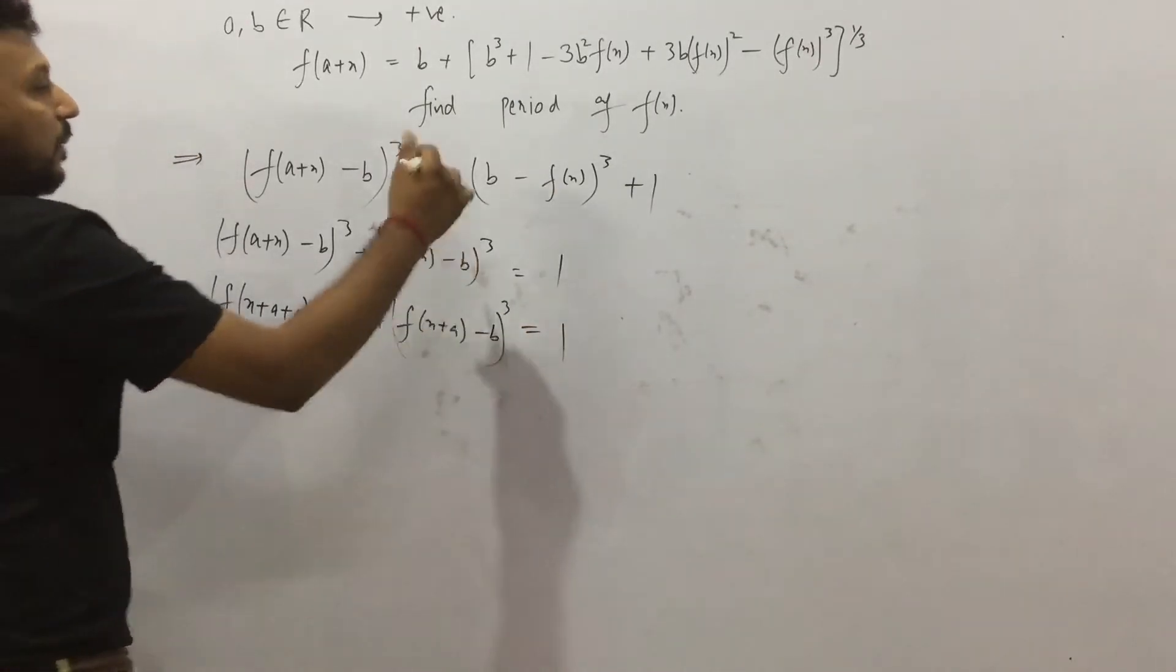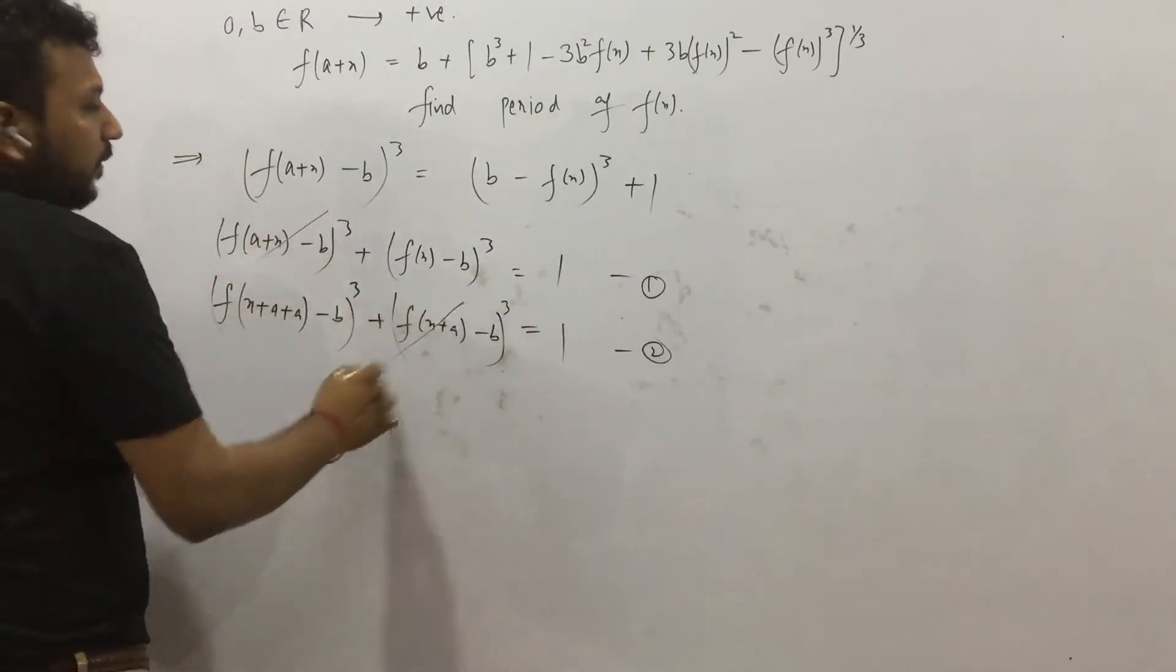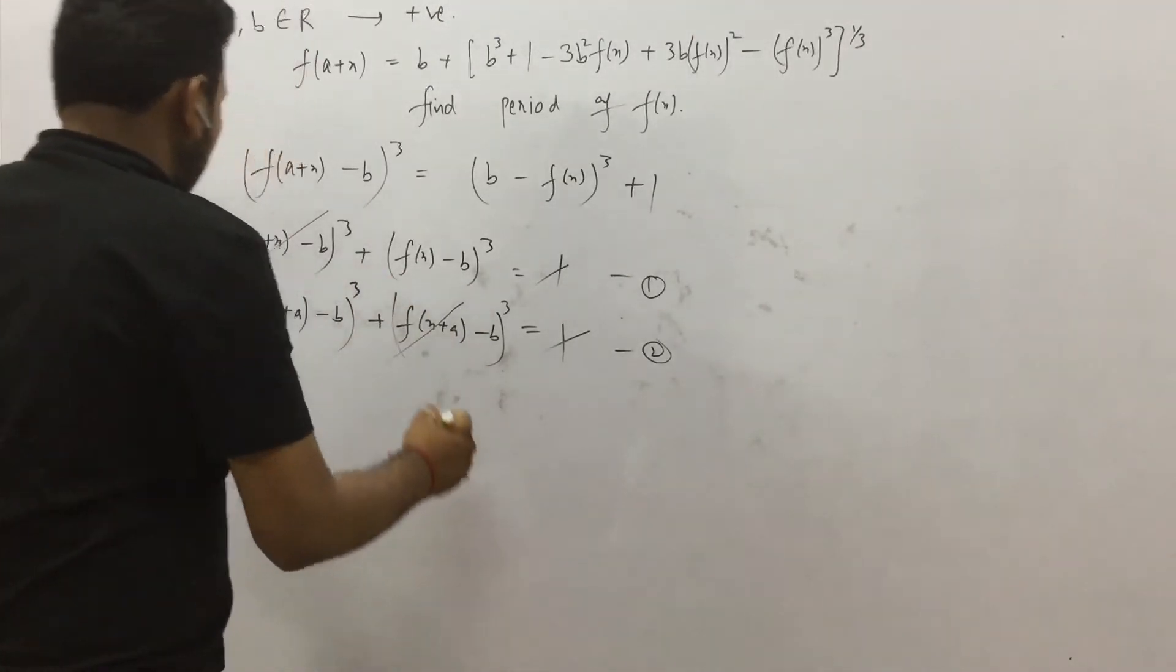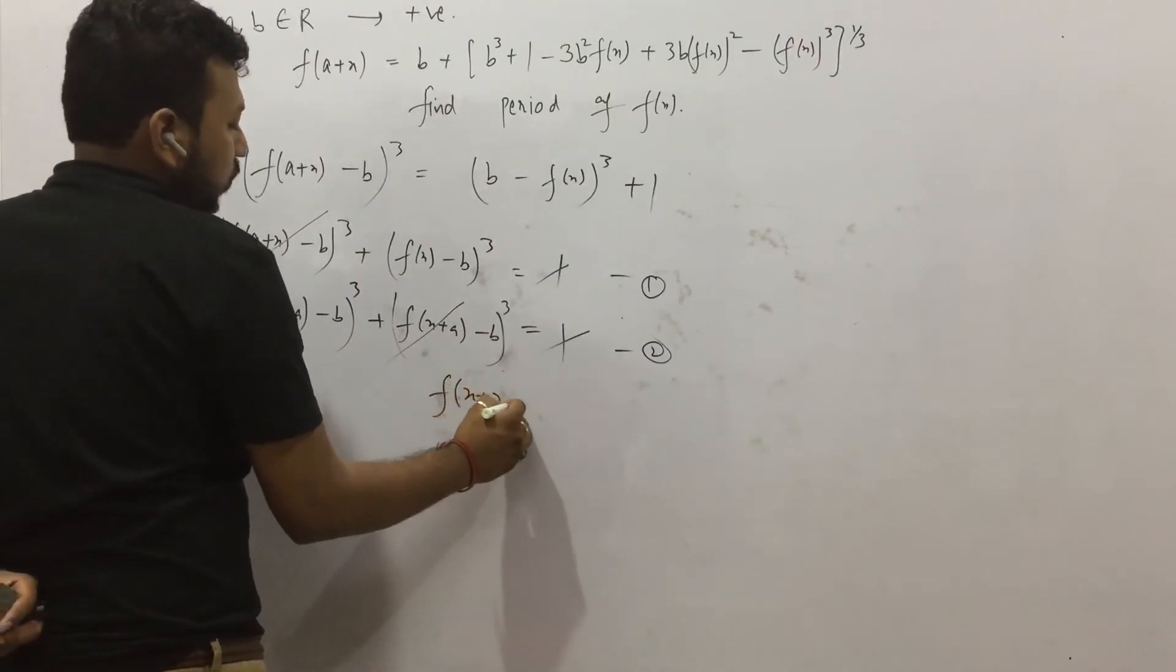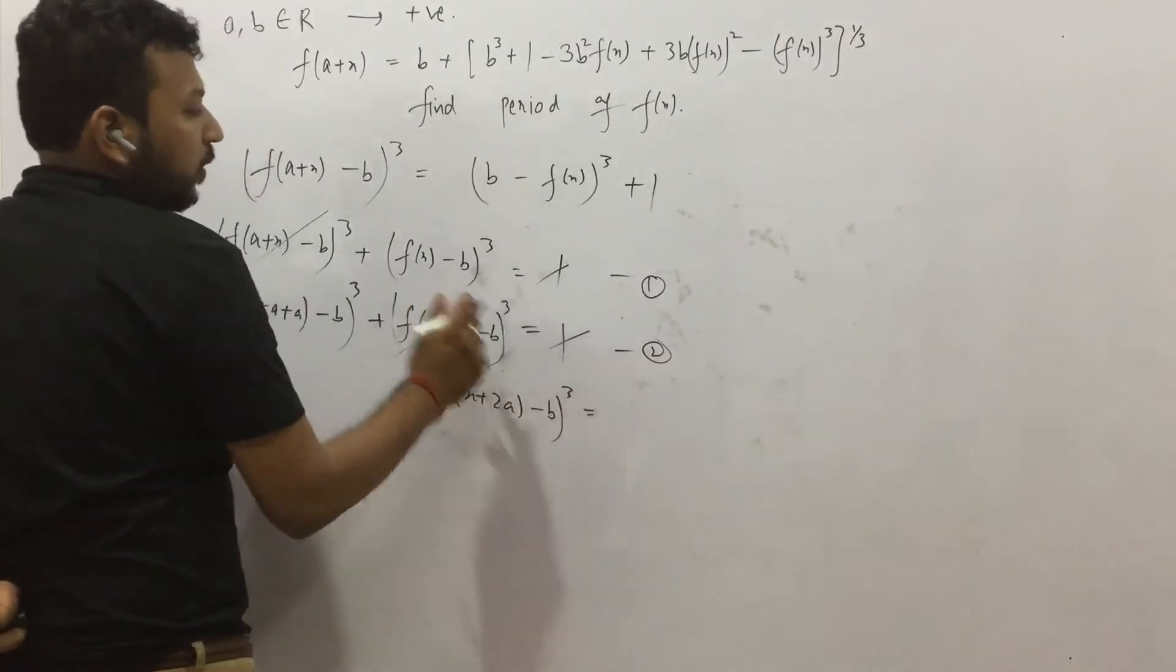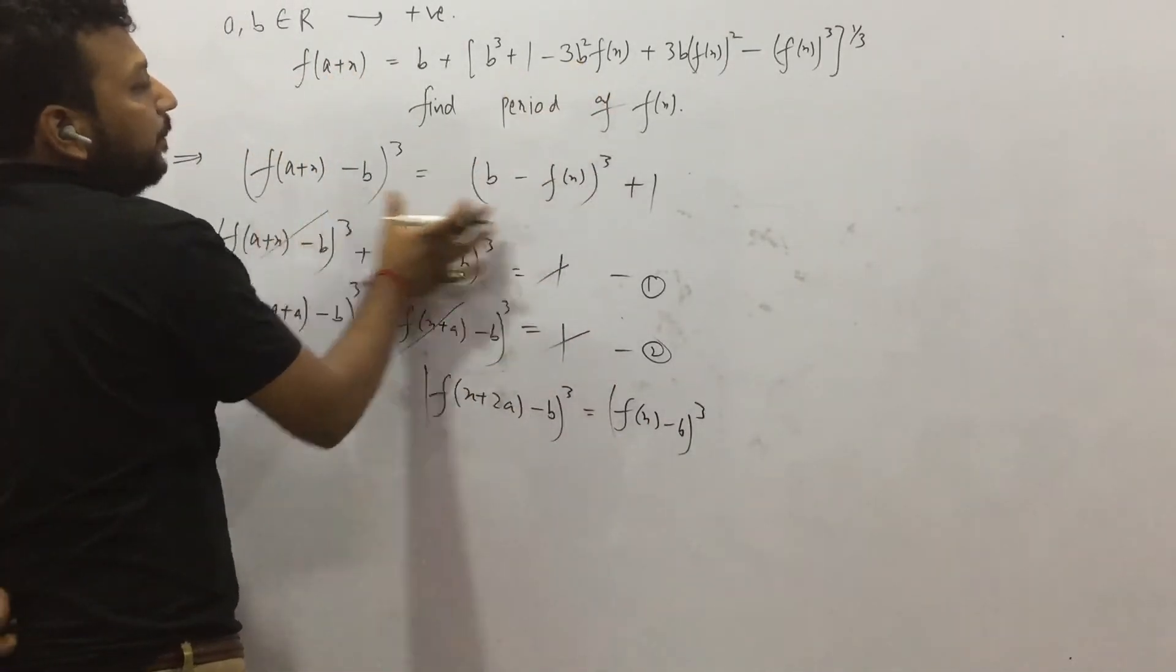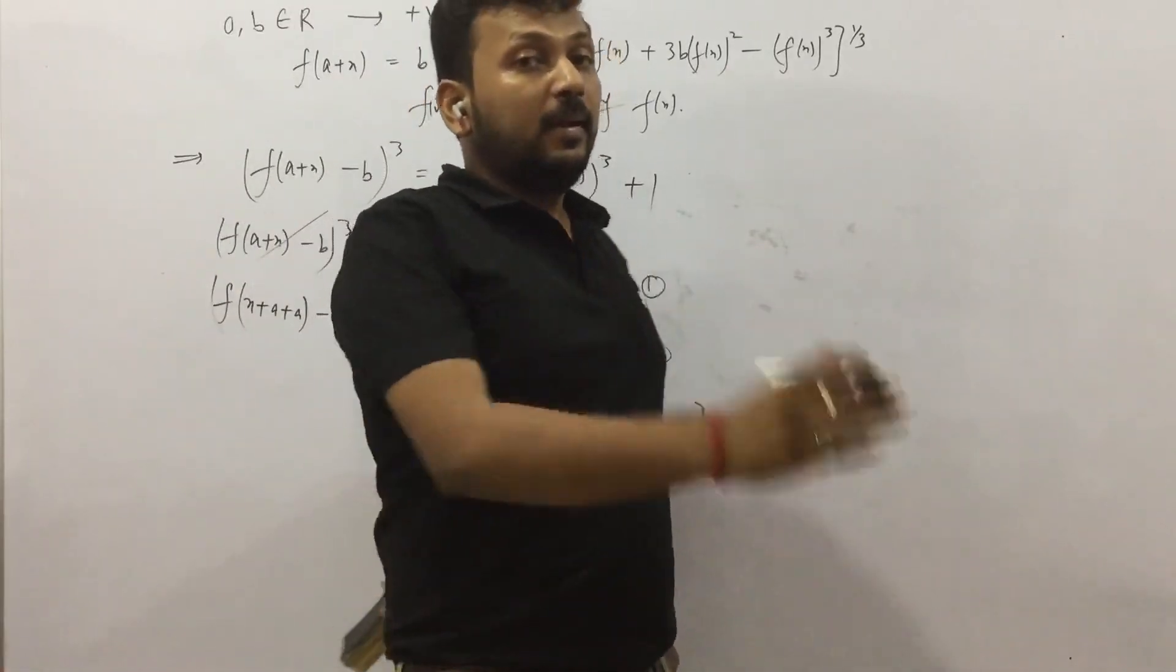Now I can write like this. If I subtract both—these are the two equations, 1 and 2—if I subtract both, I think this gets cancelled. 1 gets cancelled. And I have this is equal to this. So if I equate both, what do I get? I will write f(x + 2a - b)³ equals (f(x) - b)³. First of all, from this complex expression, I got this simple expression. From this term only, you should know that you are going in the right direction.